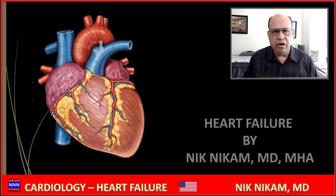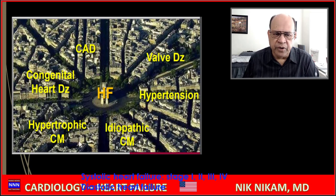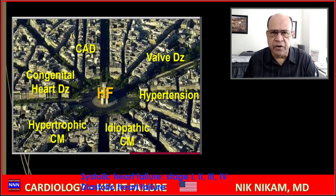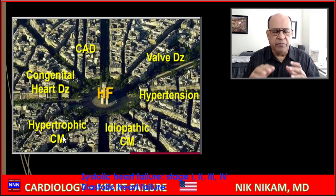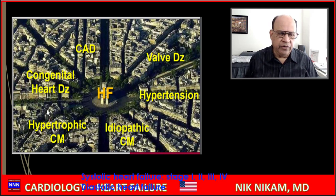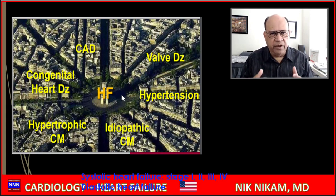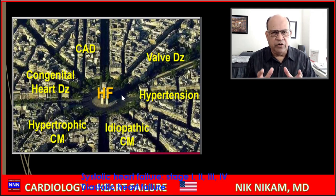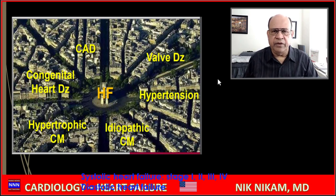To get optimal results when we treat patients with heart failure, let us begin. No matter what kind of heart disease you have — be it coronary artery disease, valvular heart disease, hypertension, idiopathic cardiomyopathy, myocarditis, congenital heart disease, or hypertrophic cardiomyopathy — eventually all these roads lead to either systolic or diastolic heart failure. We need a basic understanding of pathogenesis, pathophysiology, and clinical presentations of both.